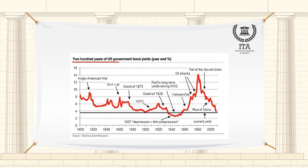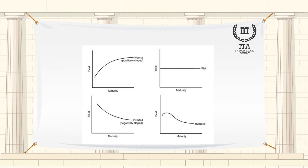Historically, a downward sloping or inverted yield curve has been an indicator of recession on the horizon or, at least, that investors expect the central bank to cut short-term interest rates in the near future. A flat yield curve means that investors are indifferent to maturity risk, but this is unusual.